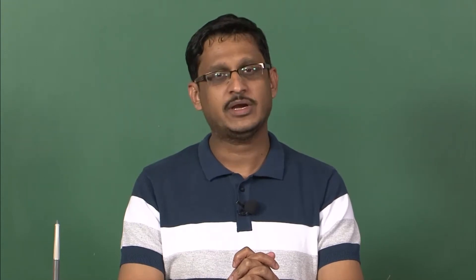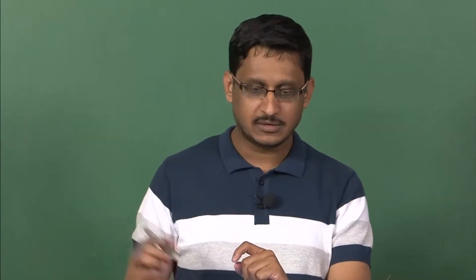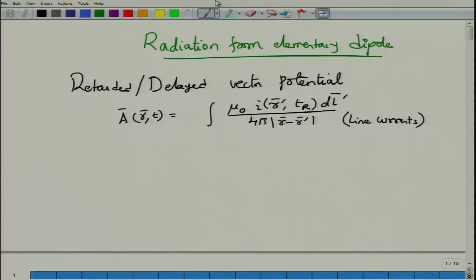We will do so by first calculating the magnetic vector potential. Once I know the magnetic vector potential, I will use the known relationship between vector potential A, scalar potential phi, electric field E and magnetic field H. Recall the expression for the retarded or delayed vector potential. A is the vector potential at any observation point R and at time T, written for the line current distribution.